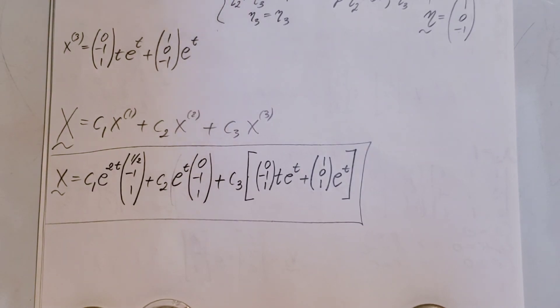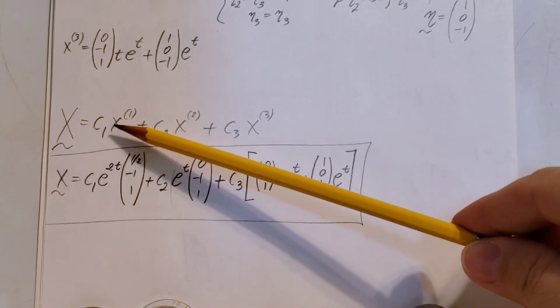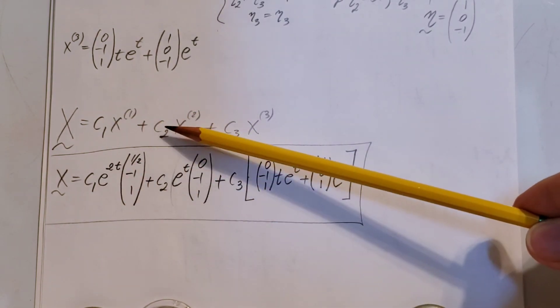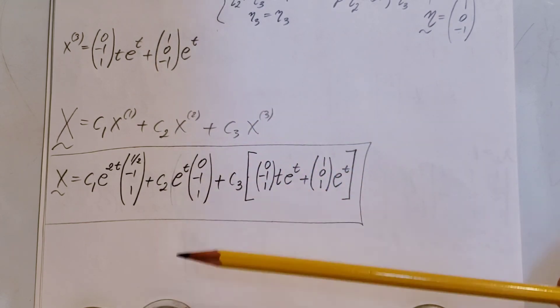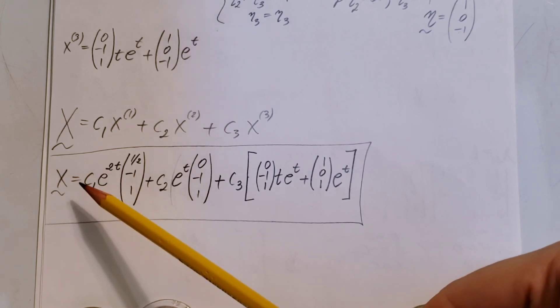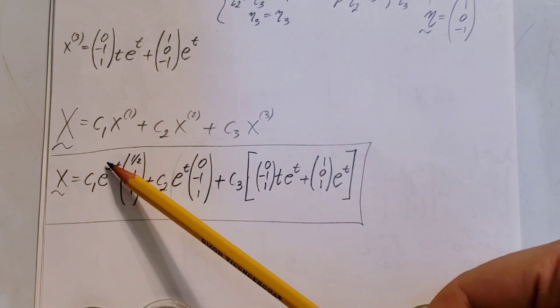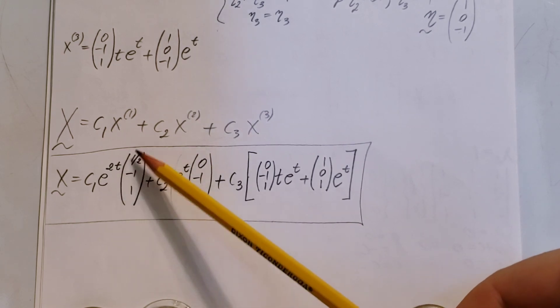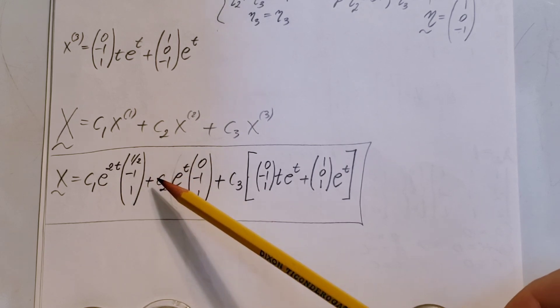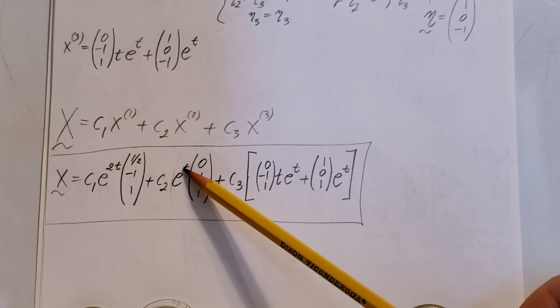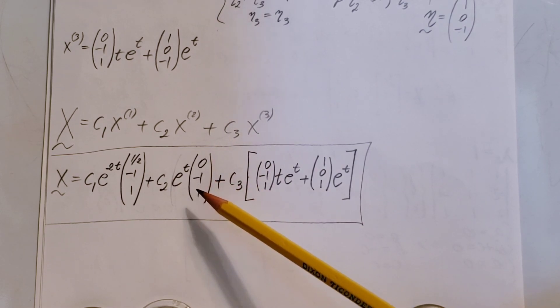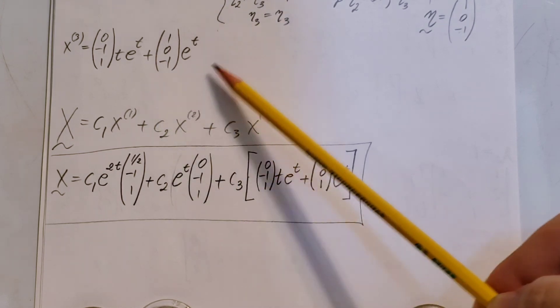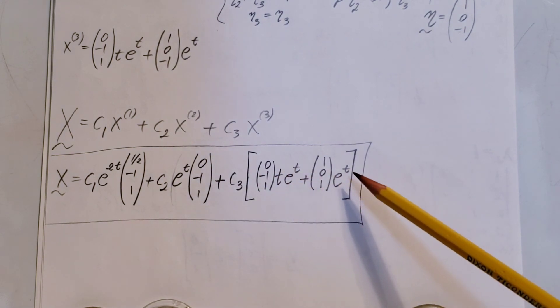And, to finish up the problem, let's write up our general solution, which will be simply c1 times our first vector, a first solution, c2 times our second solution, and c3 times our third solution. That written out is x vector equals c1 times e to the first eigenvalue times t. The whole thing times the first eigenvector. Then, plus c2, e, lambda t, and my lambda was 1. My second eigenvector was 0, negative 1, 1. Plus c3, and what we have found right here, simply plug it in, right there. And, this would be our final answer for the solution of this problem.